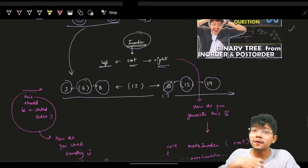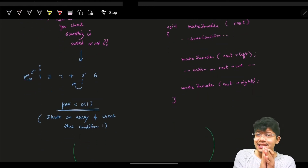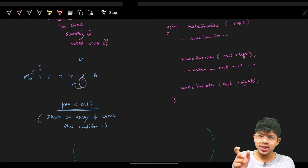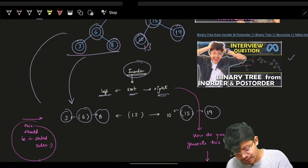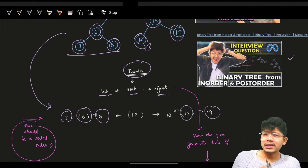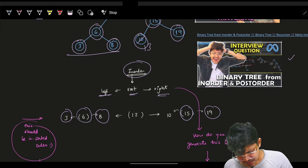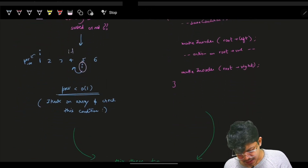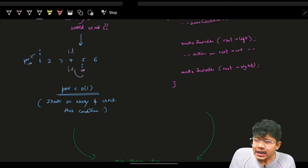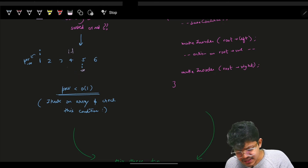We can use this property to determine validity. If given a simple list, you'd check if it's sorted by comparing each element at position i with the element at i-1. We could convert the tree to an in-order vector and iterate — but that takes O(n) extra space. Can we optimize?